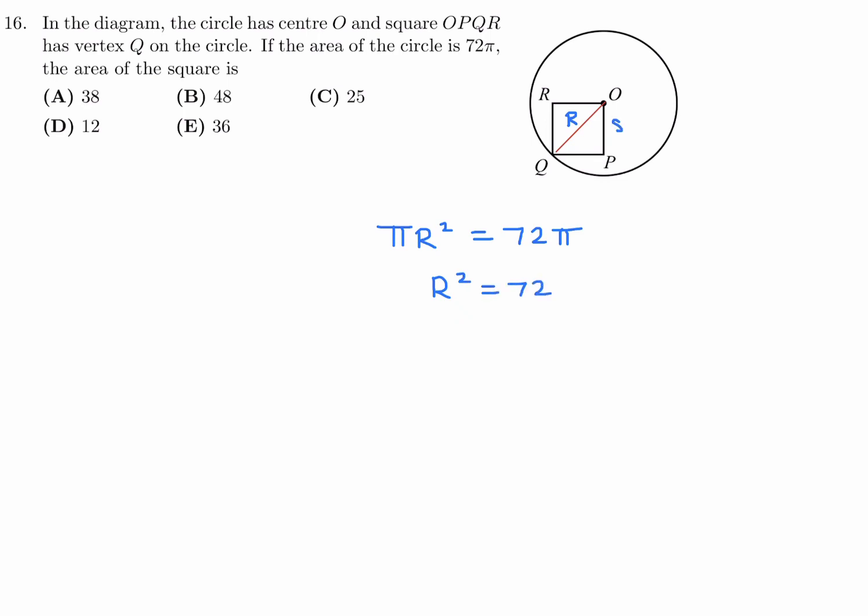I'll call S the side of the square. So using Pythagoras, S squared plus S squared is equal to R squared. That means 2S squared is R squared. S squared is R squared divided by 2. R squared we just calculated as 72, so S squared is equal to 72 divided by 2, which is 36. The area of the square is S squared, so there we go. We just got it. Number 16, the answer is E.